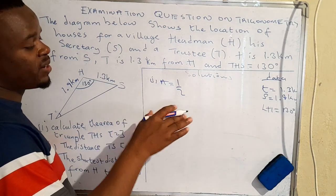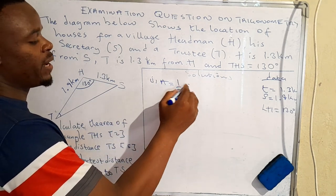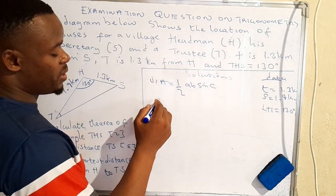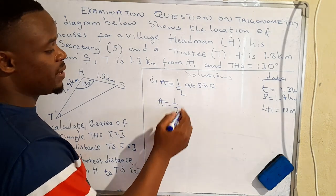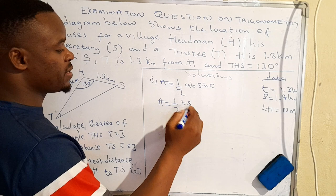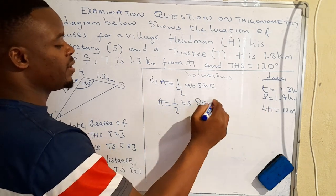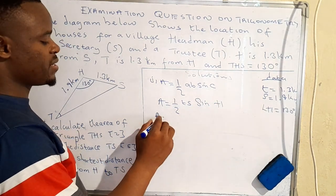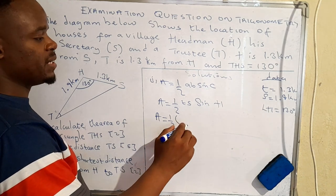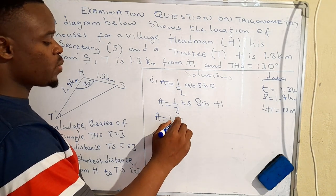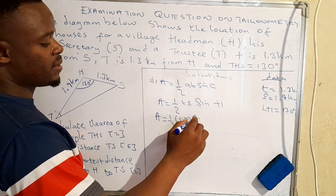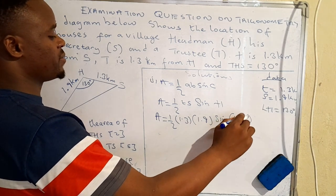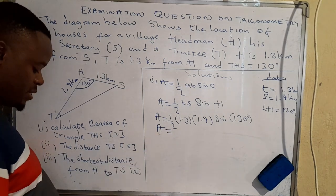For any non-right-angle triangle, the area is given by half times a times b times sine C. So we say: area is equal to half times t times s times sine H. Plugging in the values: area is equal to half times 1.3 times 1.9 times sine 130 degrees.